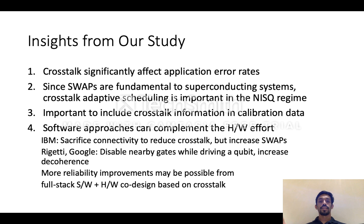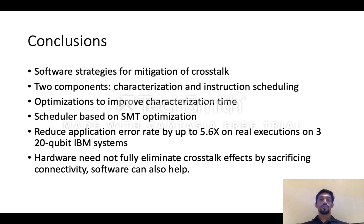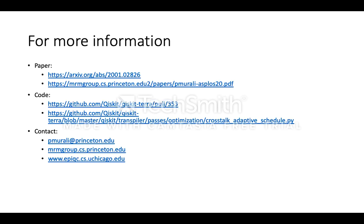To summarize: crosstalk significantly affects applications, and crosstalk-adaptive scheduling is very important for swap circuits and other benchmarks. Since swap circuits are so frequent in quantum programs, ideally vendors should measure and expose crosstalk data for their devices to help handle it in software. Our work also shows that crosstalk mitigation is not just the job of hardware — software can offer significant advantages. If we redesign both software and hardware together, we may get a better overall design point with respect to crosstalk. To conclude, we presented the first software system for mitigating crosstalk in NISQ systems, showing using real executions up to 5x reduction in error rates compared to current state-of-the-art methods. Our code is open source through Qiskit — feel free to play with it, and you can find our full paper using the links provided. Thank you.